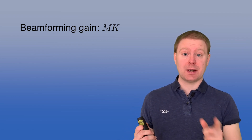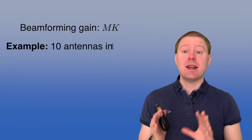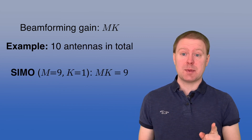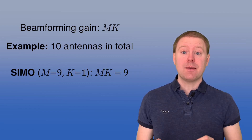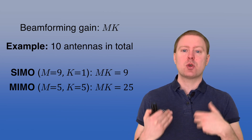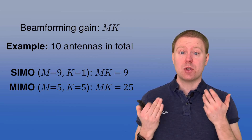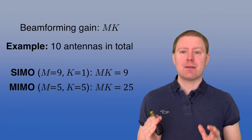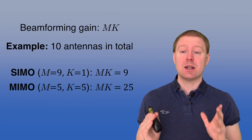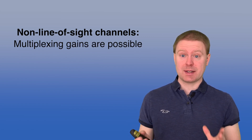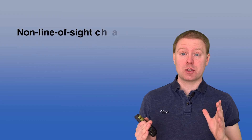Even without multiplexing gain, having multiple antennas at both sides is beneficial. For example, with 10 antennas total: a SIMO setup with 9 receive and 1 transmit antenna gives a beamforming gain of 9, while splitting 5 antennas on each side gives 5 times 5 equals 25. So it is still very beneficial to have multiple antennas at both ends, even in line-of-sight where we only get a rank-1 channel. In non-line-of-sight cases we can still see a multiplexing gain, which is what the next video will cover.